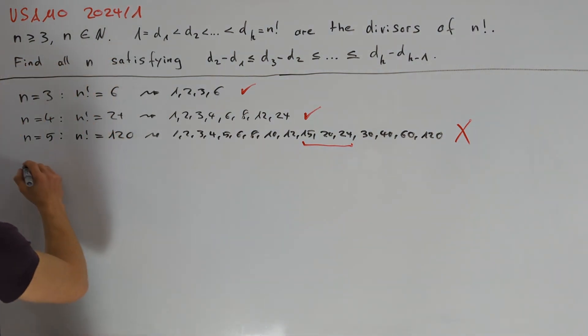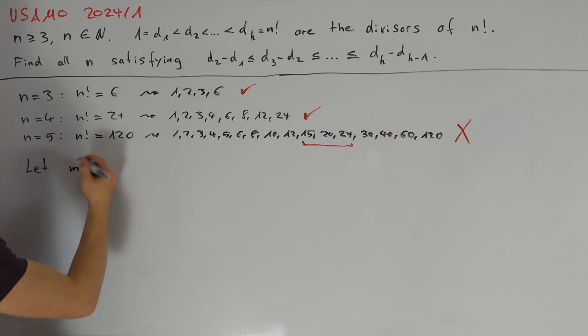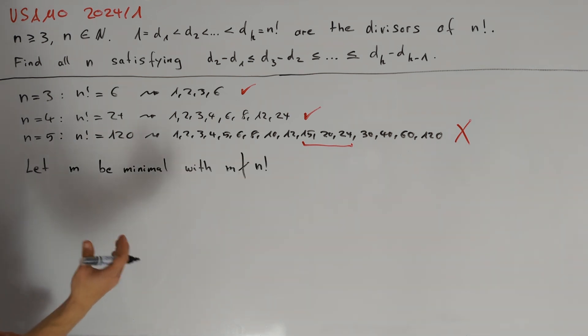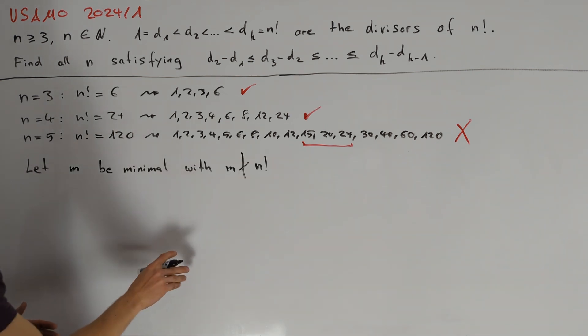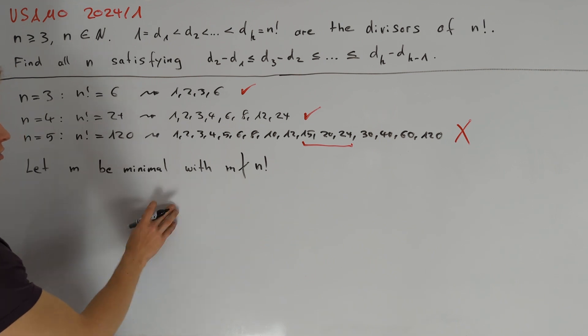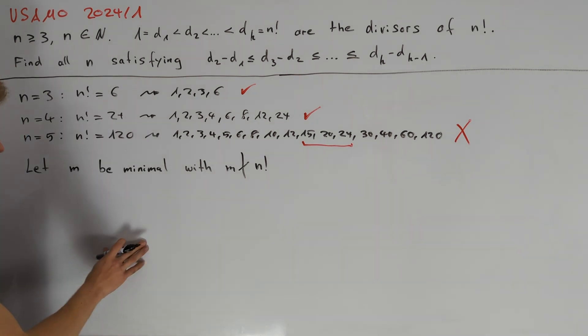It seems unlikely that this holds if n has many divisors, so we want to prove it is false for n large enough. Let us define m to be minimal such that m does not divide n factorial. The idea is to construct two divisors of n factorial both greater than m with difference 1.